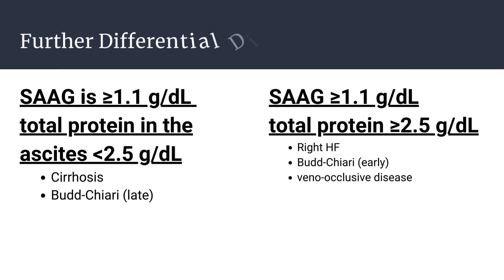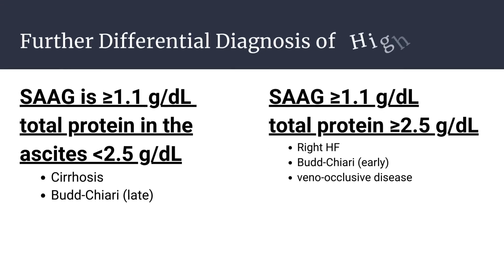Further differential diagnosis of high SAG: for high SAG and low total protein levels in ascitic fluid, the causes are cirrhosis and late Budd-Chiari syndrome. For high SAG and high total protein levels in ascitic fluid, the causes are right heart failure, early Budd-Chiari syndrome, and veno-occlusive disease.